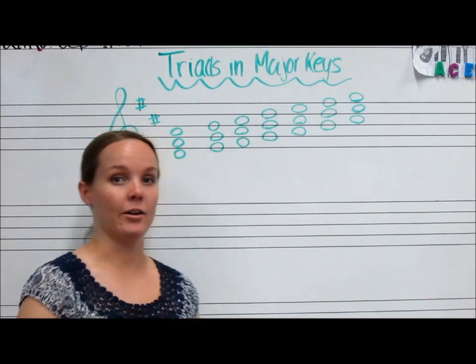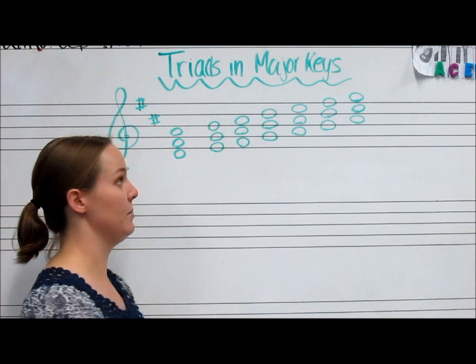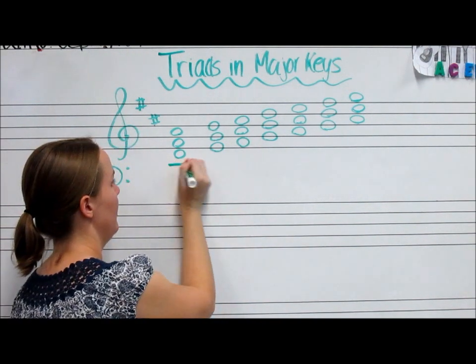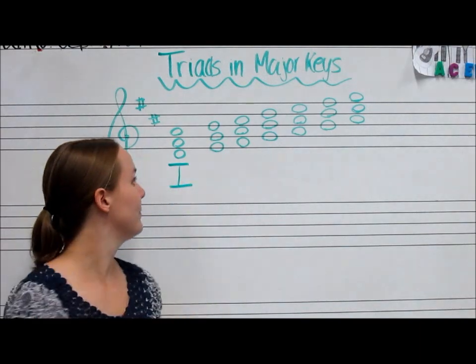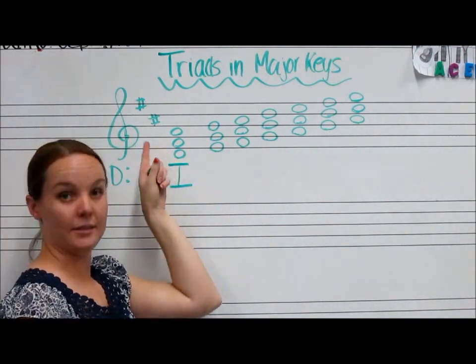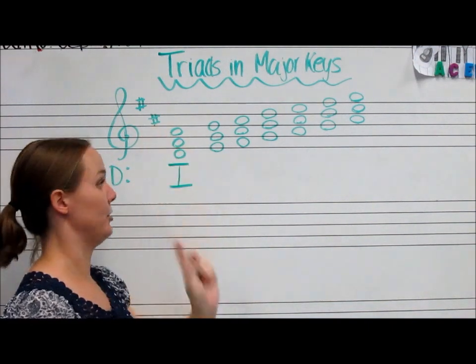So if you build a triad on your first scale degree, it's going to be major. And we're going to label this triad with a capital Roman numeral I. The reason it's major again, you have D, F sharp because it's in the key signature, A, which is a major triad.